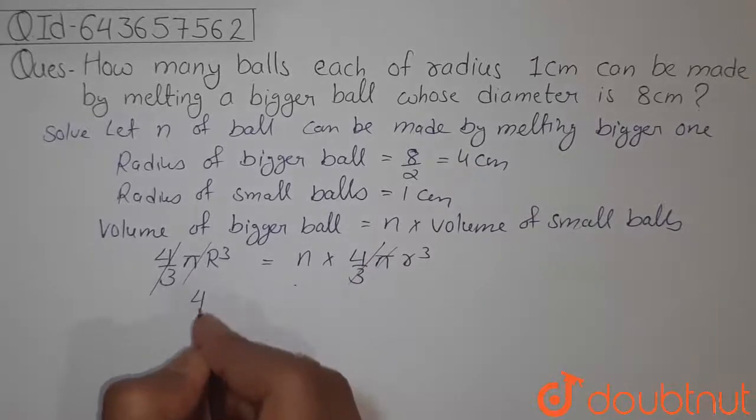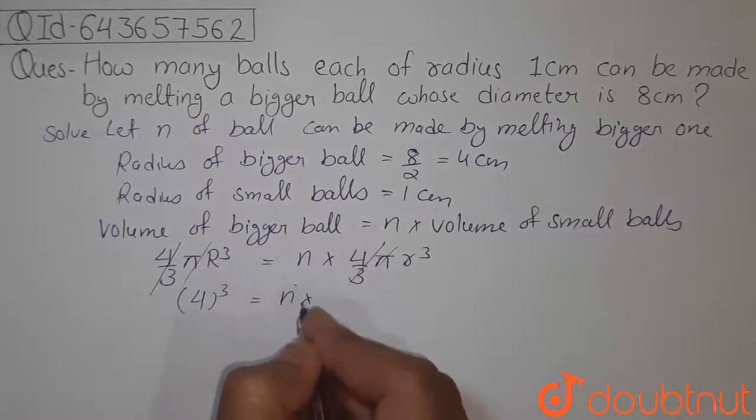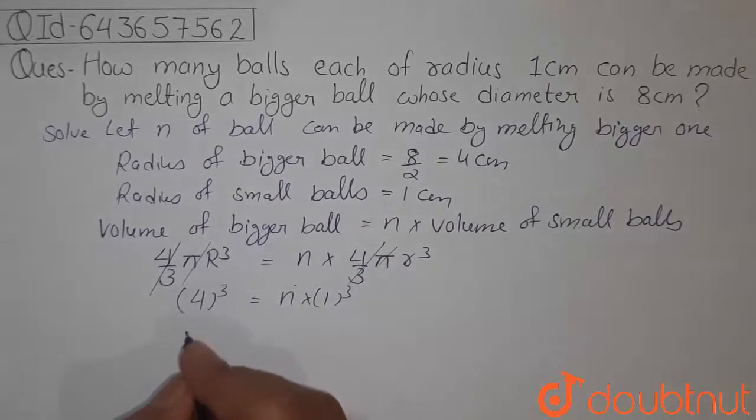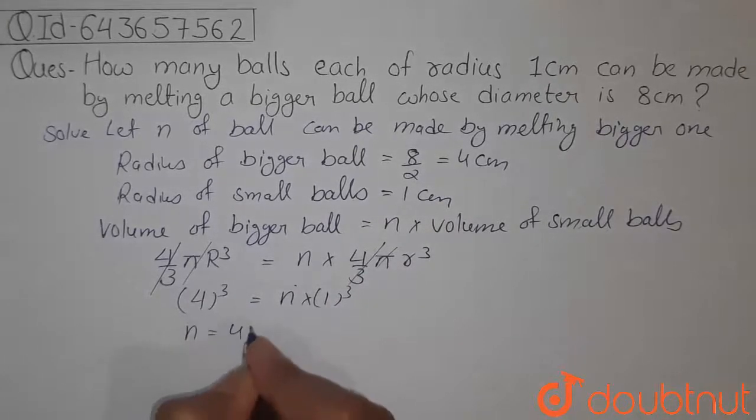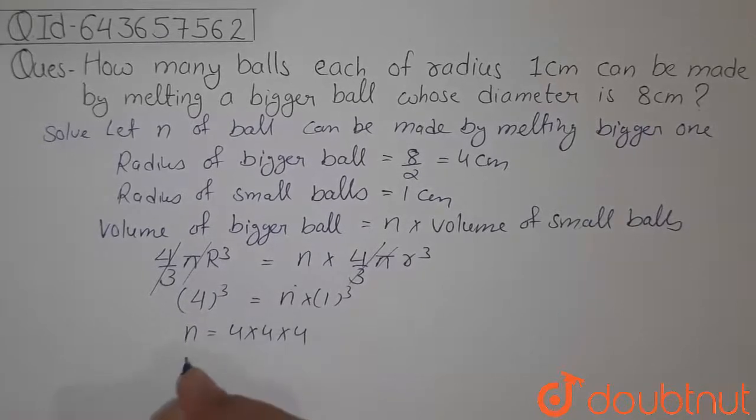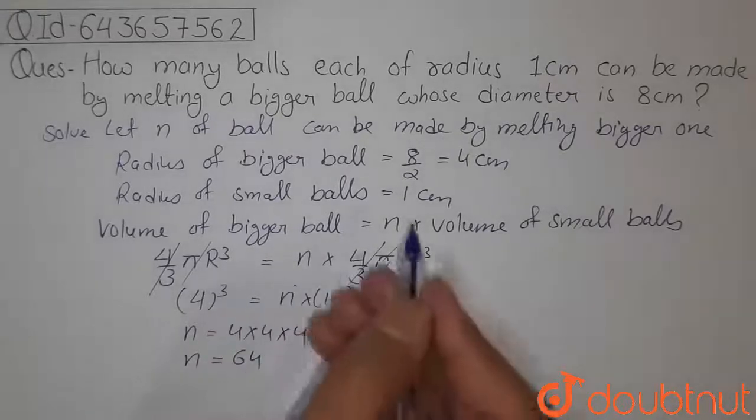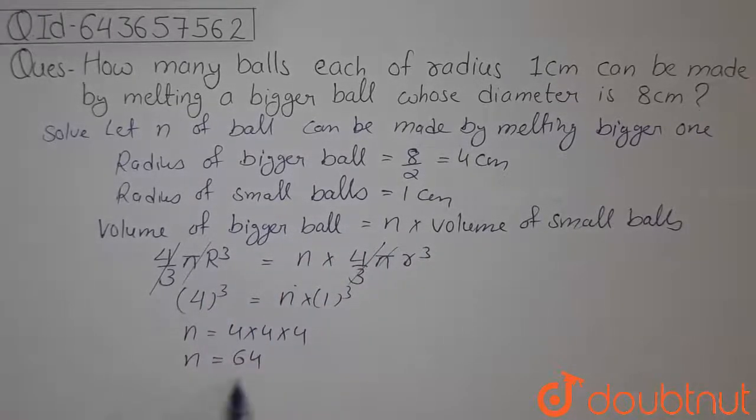This equals n times 1³. So 4³ will be 4 times 4 times 4, which equals 64. So 64 balls can be made by melting the bigger ball. This is our answer. Thank you.